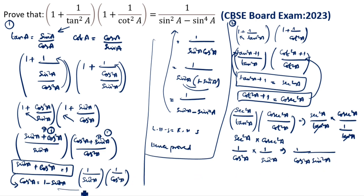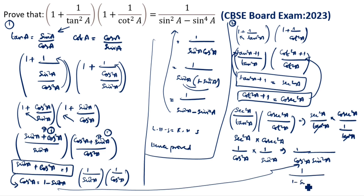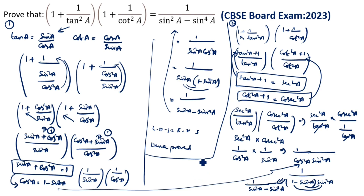Again we will apply this formula. Cos square A — how we will write? 1 by (1 minus sin square A) into sin square A. So what is the answer? 1 by (sin square A minus sin power 4A). You have to multiply. So LHS equal to RHS, hence proved. This is the second method. Thanks for watching this video.